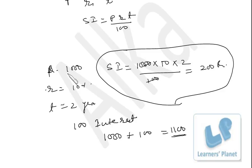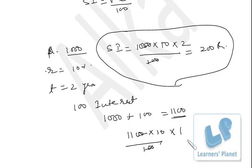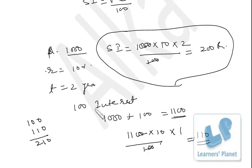Initially the principal was 1,000, now the principal is 1,100. At the beginning of the 2nd year, principal is 1,100, rate of interest once again 10%, for 1 year divided by 100. So interest for the 2nd year is Rupees 110. For the first year interest was 100, for the second year interest was 110. So total interest after 2 years is Rupees 210, because in the second year you are earning interest on interest also.